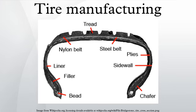Body ply: The body ply is a calendared sheet consisting of one layer of rubber, one layer of reinforcing fabric, and a second layer of rubber. The earliest textile used was cotton; later materials include rayon, nylon, polyester, and Kevlar. Passenger tires typically have one or two body plies, which give the tire structural strength. Truck tires, off-road tires, and aircraft tires have progressively more plies. The fabric cords are highly flexible but relatively inelastic.